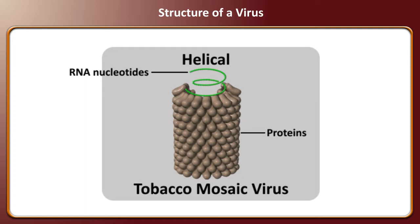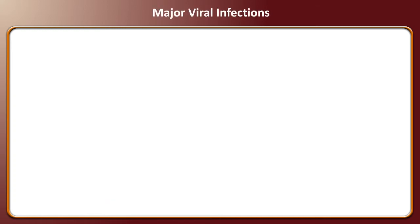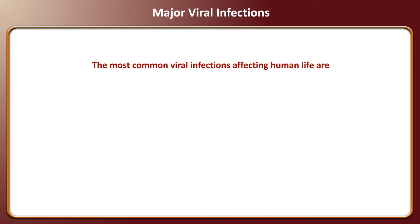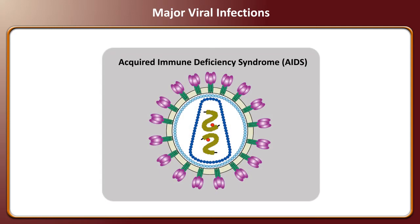Tobacco mosaic virus is an example of a helical virus. The major viral infections affecting human life are AIDS, chickenpox, influenza, yellow fever, and rabies. AIDS is caused by the human immunodeficiency virus, HIV.